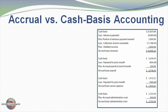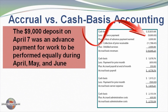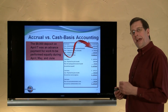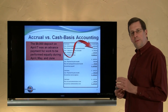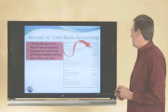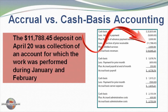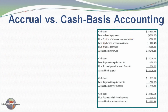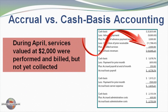Looking at the cash basis to accrual revenue conversion: the $9,000 deposit on April 7th is subtracted from cash basis revenues of $25,833 because although it was cash received, the work spans April, May, and June. We add back $3,000 — the portion earned relating to work provided in April. The $11,788 collection for prior work is also subtracted, as it related to January and February. Finally, we add $2,000 for April work not yet billed, giving accrual basis revenues of just over $10,000 — quite a difference from the cash basis figure.